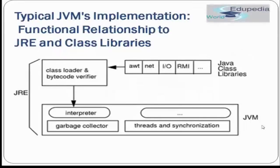Let's see this figure. This is a typical JVM implementation showing the relationship between JRE, class libraries, and JVM. We have Java class libraries — such as io, net, awt, rmi — or any user-defined Java class. Then we have a class loader and a byte code verifier. All your Java code or Java libraries are configured by the class loader. The class is loaded by the class loader, and then byte code verification happens — the byte code verifier verifies whether the class has been properly loaded or not.